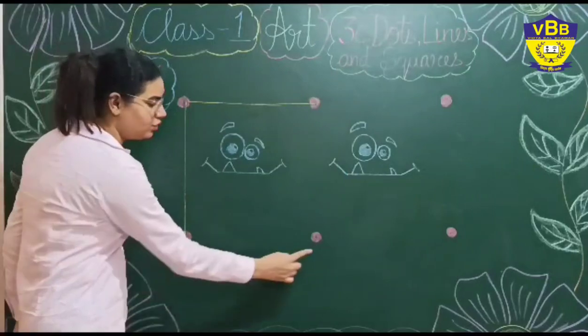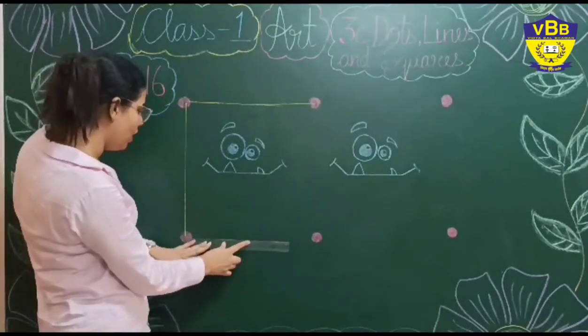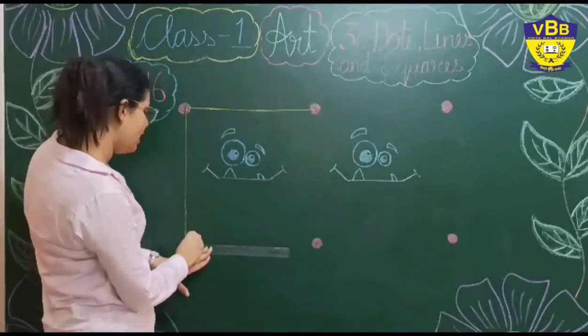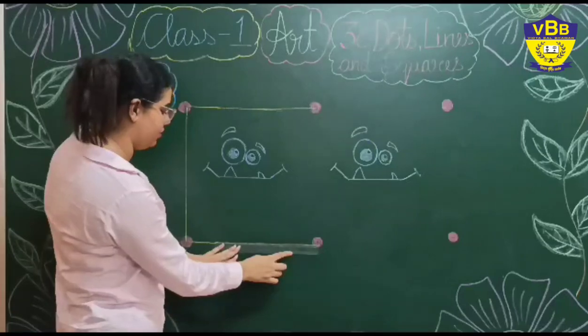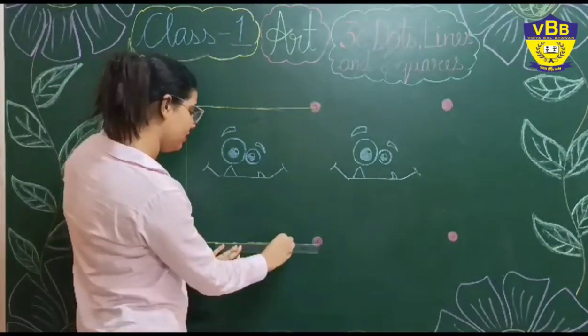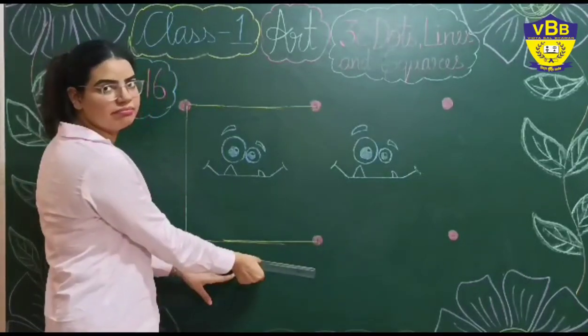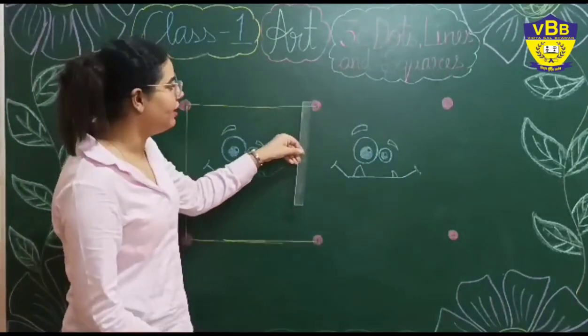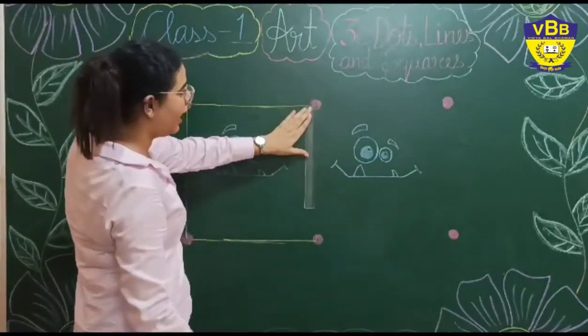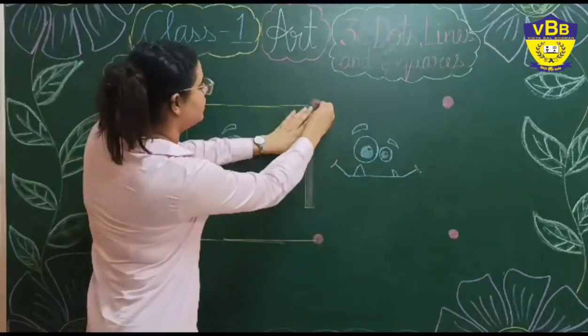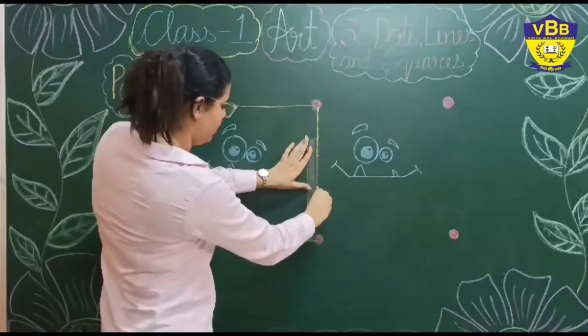Now let's join these two dots. Okay. Place the scale in between the dots and draw a line. Like this. Correct. Now we will place the scale in between these two dots.